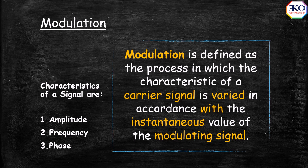I hope you remember this. Modulation is defined as the process in which the characteristic of a carrier signal is varied in accordance with the instantaneous value of the modulating signal. If you vary the amplitude, it is called amplitude modulation. If the frequency of the carrier is varied with respect to the instantaneous values of the modulating signal, then it is called frequency modulation. And similarly, if the phase of the carrier signal is varied with respect to the instantaneous value of the modulating signal, then it is called phase modulation.